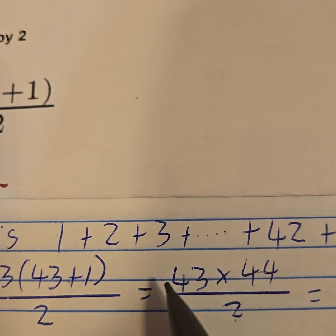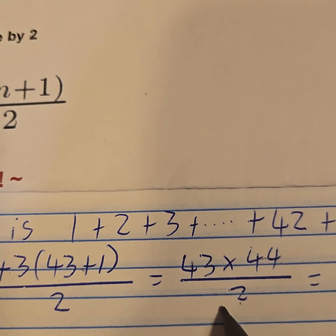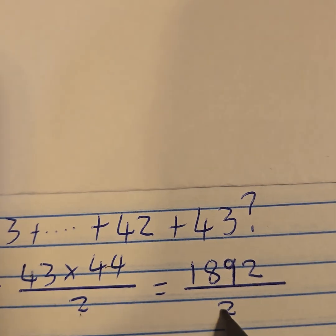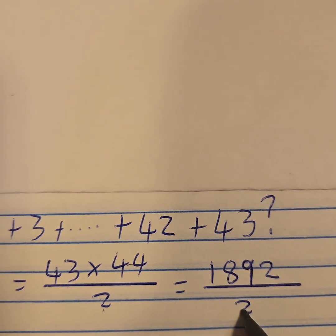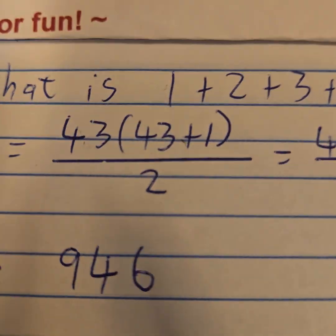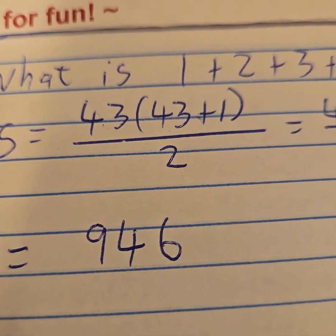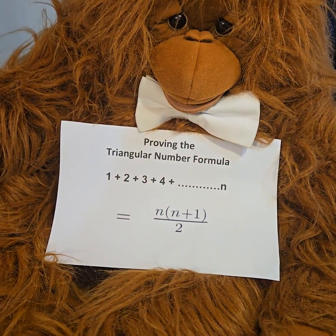Which is 1892 divided by 2. And if you work that out with a calculator, that equals 946. And thank you all for watching.